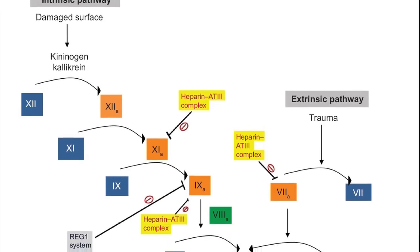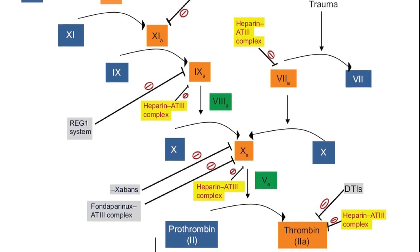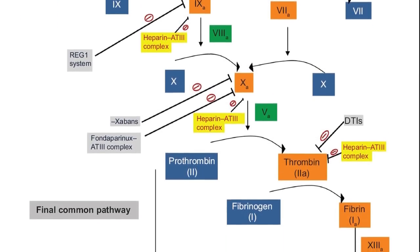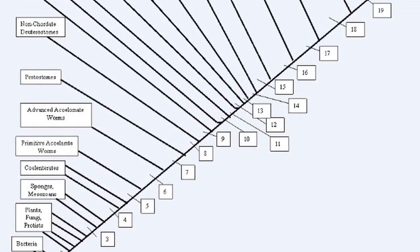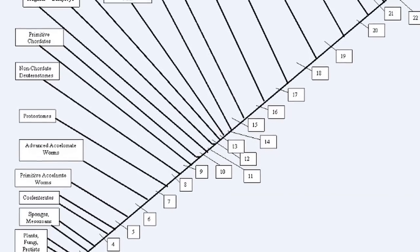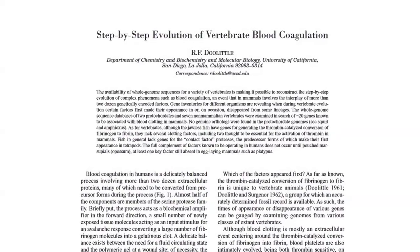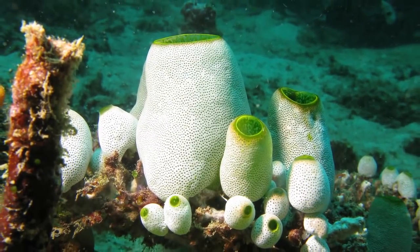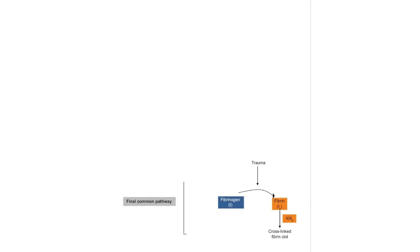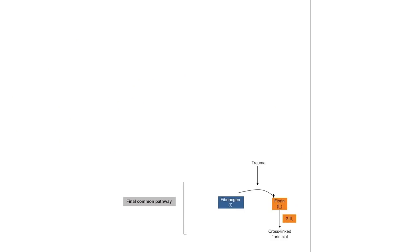This leads to another prediction Doolittle was able to make: if the clotting cascade developed step by step as our ancestors evolved, we should expect to see incrementally more of the factors — or the genes expressing them — present in organisms more closely related to us. In his continued mapping of vertebrate genes and clotting factors, Doolittle uncovered exactly that. In basal chordates such as sea squirts, the clotting system is simply the adhesion of cells to the ruptured area.